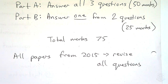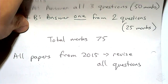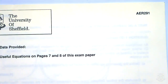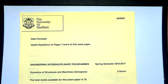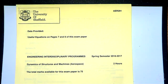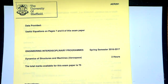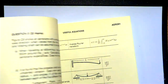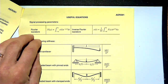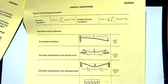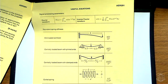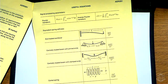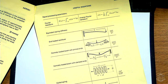Let's have a quick look at the actual paper from last year. Lots of people have asked about the formula sheet, so let's look at that first. There's some information about things like how you get stiffnesses from different types of beams or springs, then some information about second moments of area, and then the bottom part is all about the mechanical vibrations stuff.